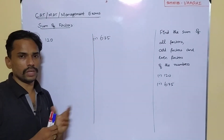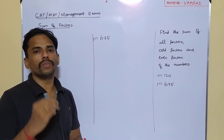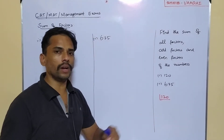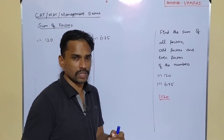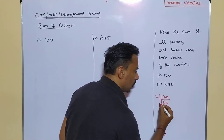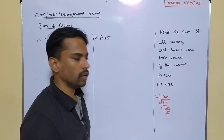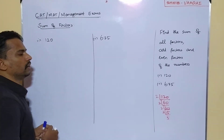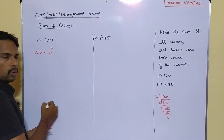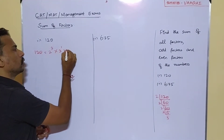We'll start with the first number, 120. The first step is to prime factorize it. Starting with the least prime number, 2: 120 ÷ 2 = 60, ÷ 2 = 30, ÷ 2 = 15. Then 15 ÷ 3 = 5. So 120 = 2³ × 3¹ × 5¹.